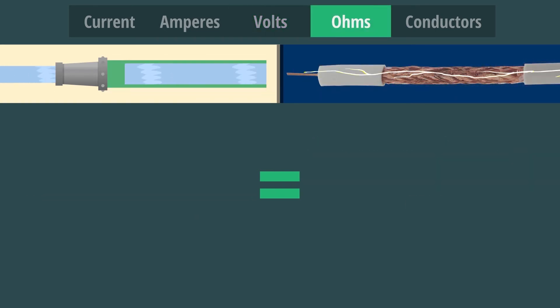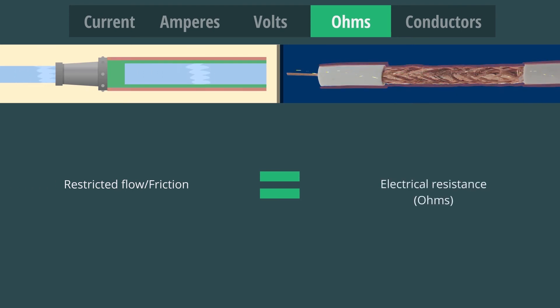Resistance can simply be thought of as the condition that restricts flow, like friction in the case of flowing water. The unit of measurement for electrical resistance is ohms. Resistance to the flow of electricity varies widely according to material.